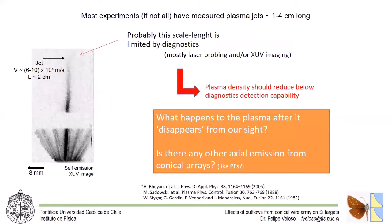But most experiments, as far as we're aware, if not all of them, have measured plasma jets of one to four centimeters long at most. Probably this scale length is limited by the diagnostic techniques in use, which is mostly laser probing and XUV imaging.